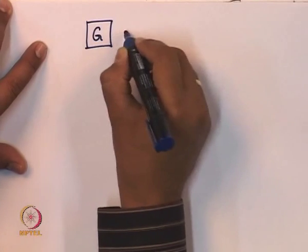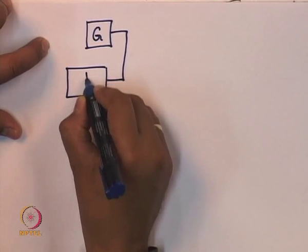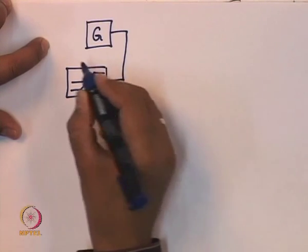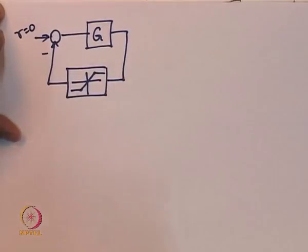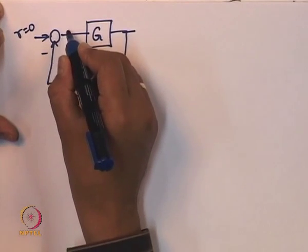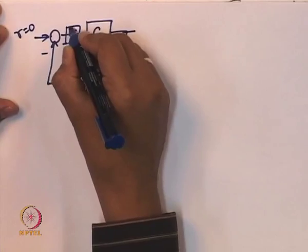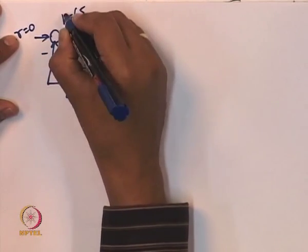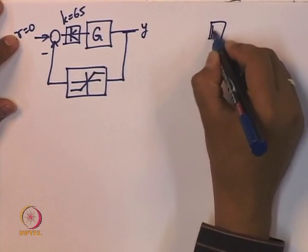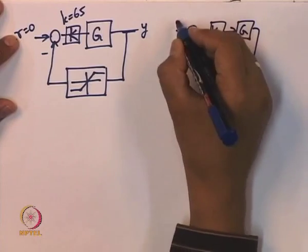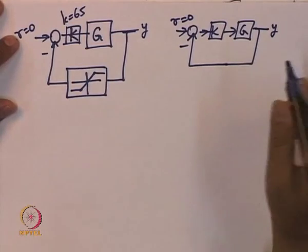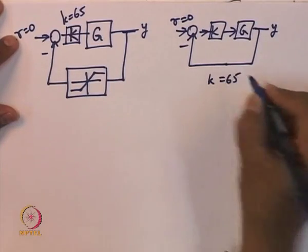Now let us come back to our saturation nonlinearity and see what this says. We have a constant gain k (say k = 65) and the saturation nonlinearity in the feedback path. We analyze this system with r = 0. For k = 65, we have two unstable closed-loop poles, meaning that if initial conditions are not zero, oscillations will build into the system — oscillations that slowly grow.